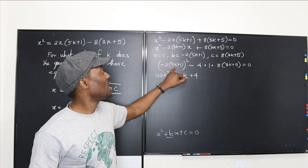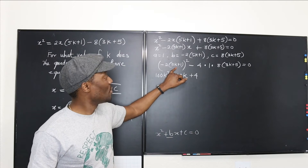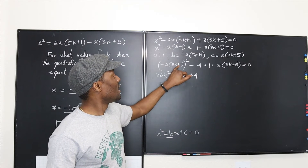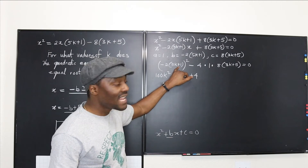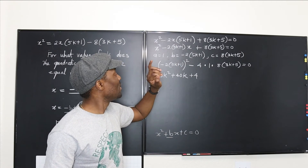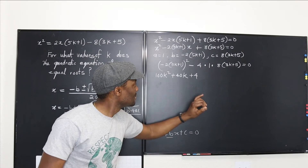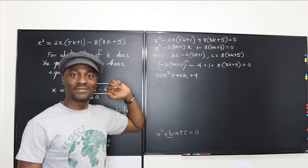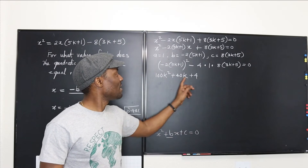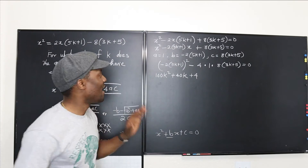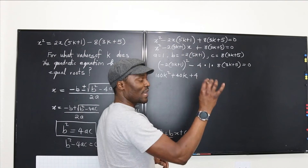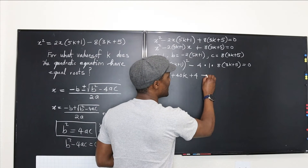When I square this, it's going to give me 4 times (25k² + 10k + 1). And then you multiply it by 4. Minus — you multiply through by 4, which is going to give you 32.